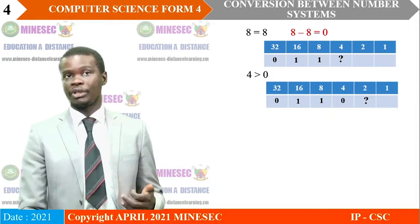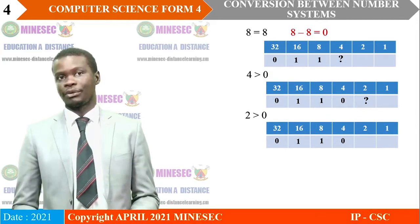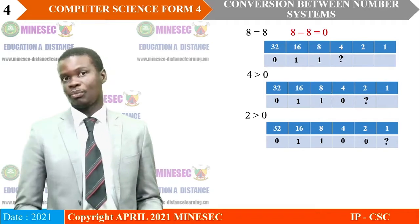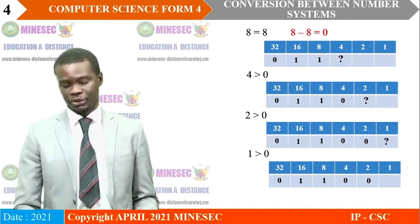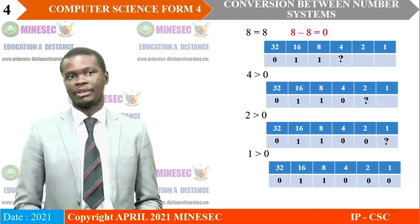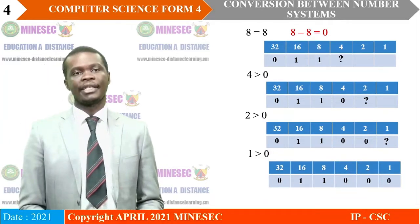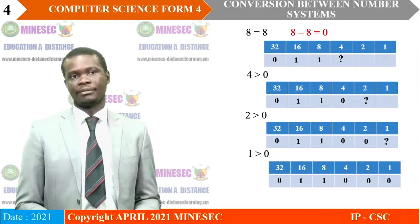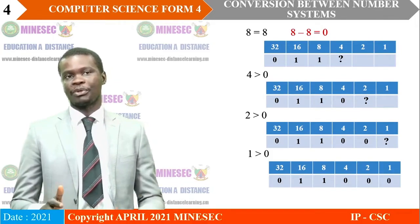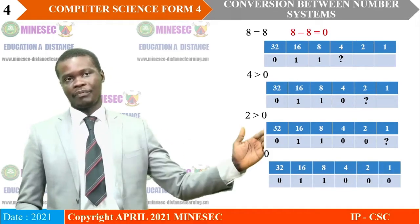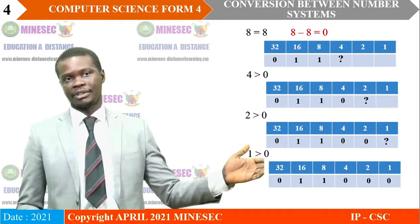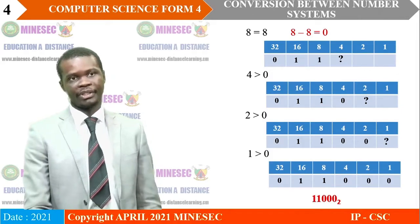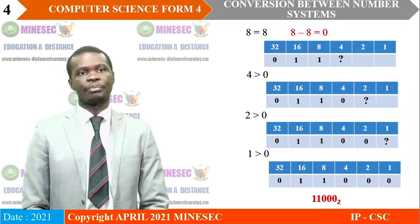We have now covered all columns in the table. We write the answer: 1 1 0 0 0 base 2. Zeros that come before the most significant digit can be ignored. So the answer is 1 1 0 0 0 base 2.